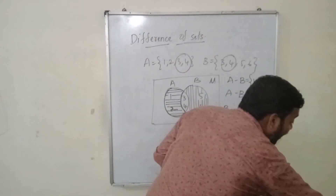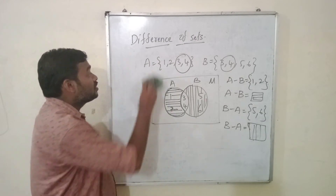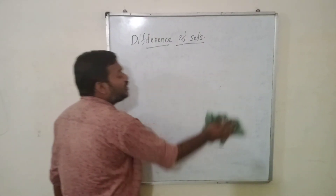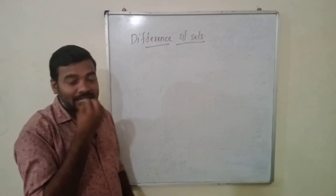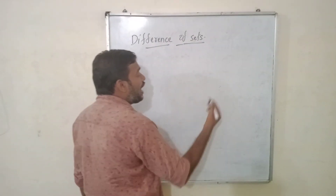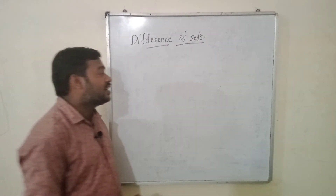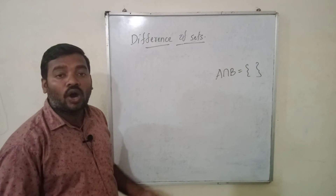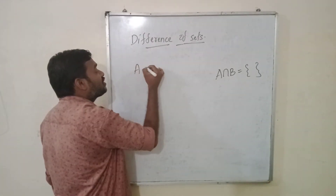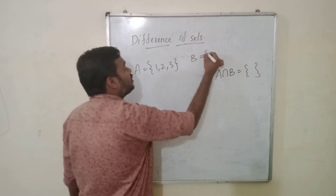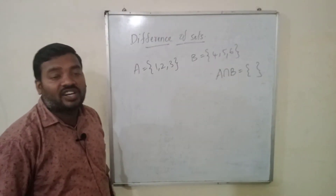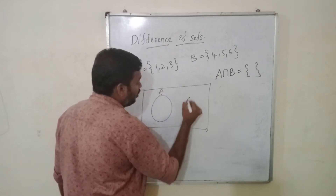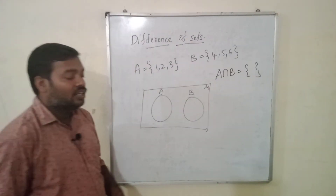So this is basic operations on sets using Venn diagrams for joint sets. Now let us go for disjoint sets. In disjoint sets there are no common elements — that means there is no intersection part. If you are asked for the intersection part of disjoint sets, you just write: A intersection B is the null set, or void set, or empty set. Let us say A is {1, 2, 3} and B is {4, 5, 6}. Represent them in sets. This is A, this is B, this is the universal set.